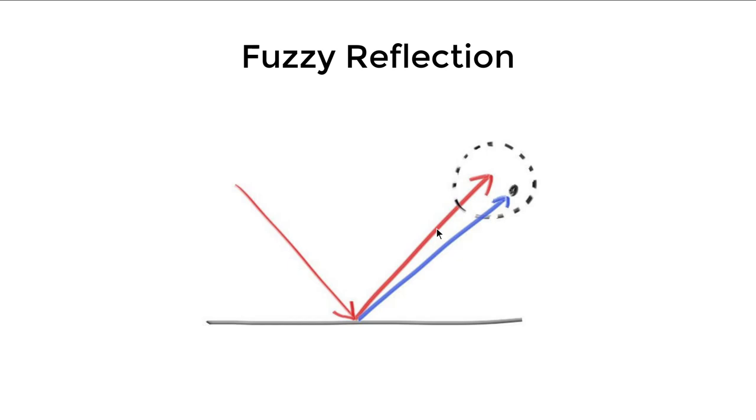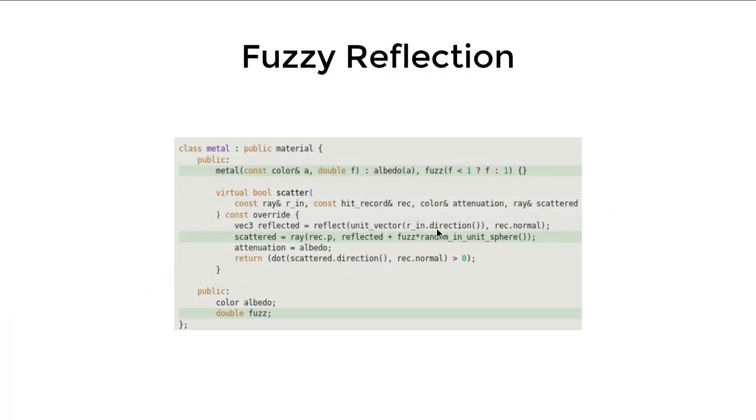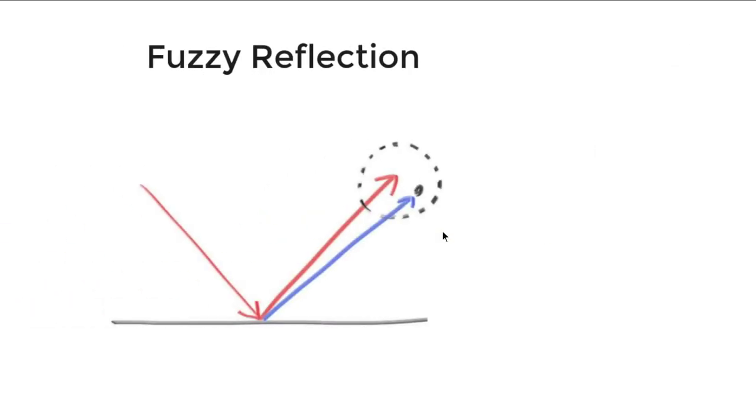But as we said before, even metal have some kind of fuzziness. So not all metals are not mirrors, basically. Well, not perfect mirrors. Even our real mirrors are not perfect. So we need, we add this fuzziness term, which is a number from zero to one. We clamp it, upper bound to one. Then just write a random unit sphere function, times the fuzziness to decide where our ray will land.